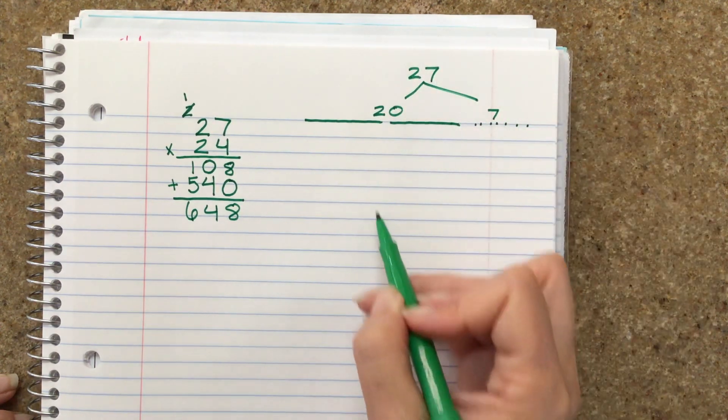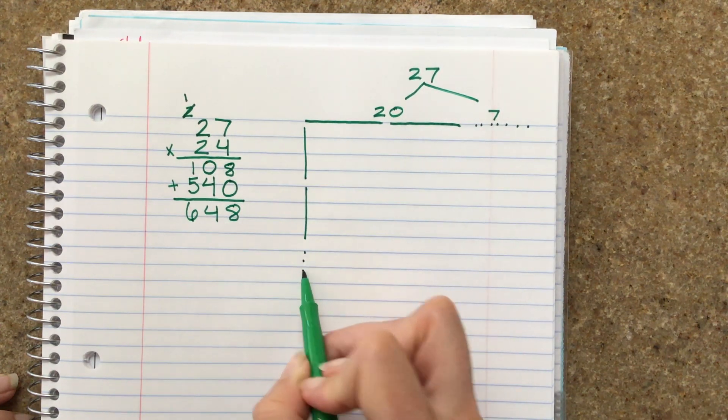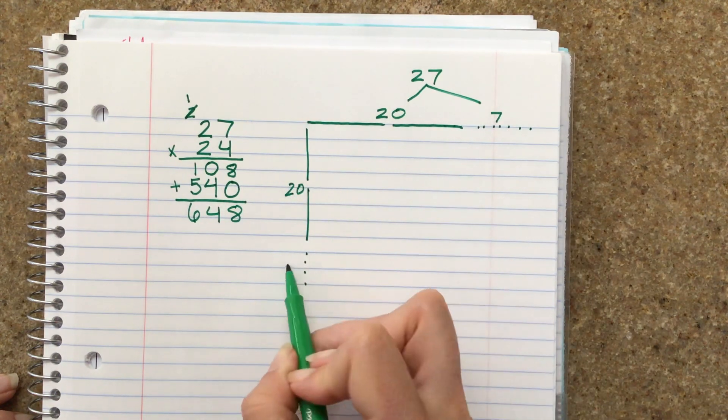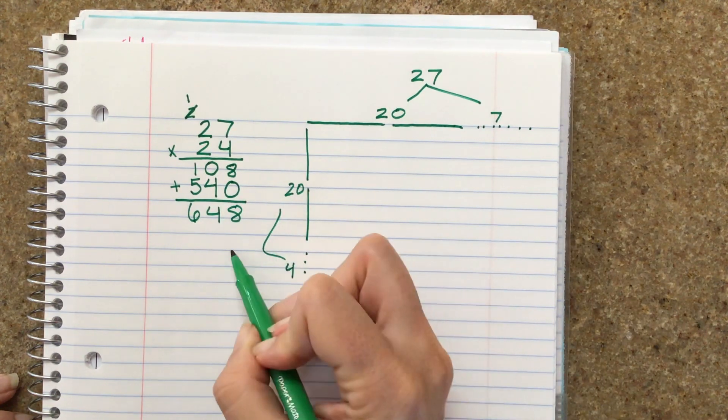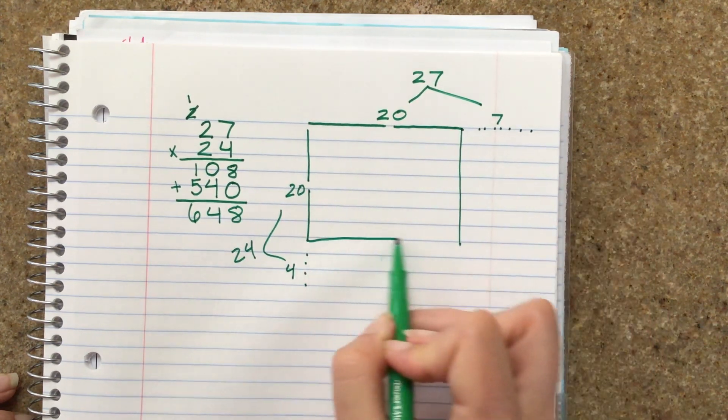And over here we have 24, 10, 20, 1, 2, 3, 4. So this will be 20 and 4. Okay, now I'm going to separate it out.